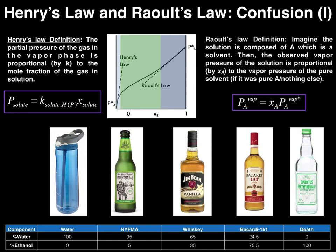So again, let's define Henry's Law. It is the partial pressure of the gas in the vapor phase, or the vapor pressure of the solute. The vapor pressure of the solute is equal to the Henry's Law constant for that solute times the mole fraction of that solute. And it says that this partial vapor pressure of that solute is proportional to its mole fraction, and the proportionality constant is the Henry's Law constant.